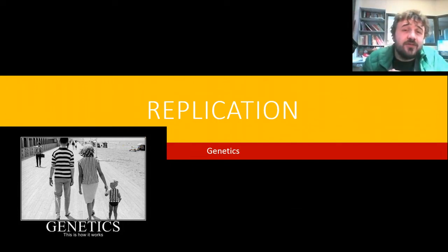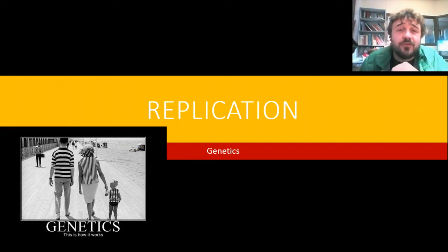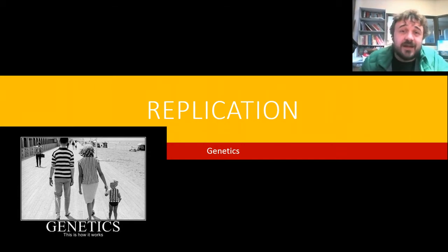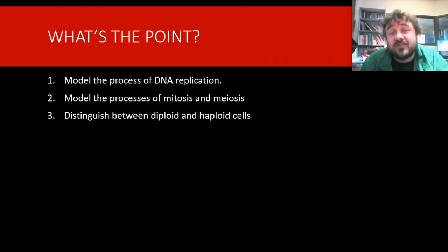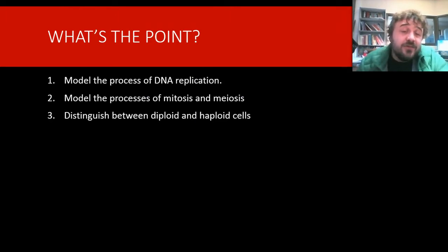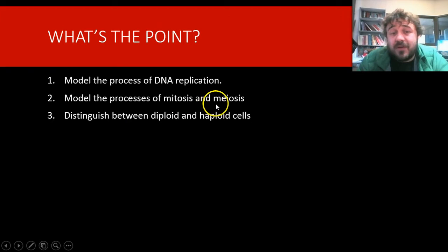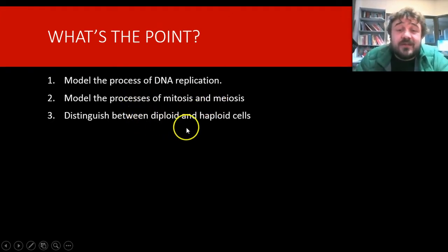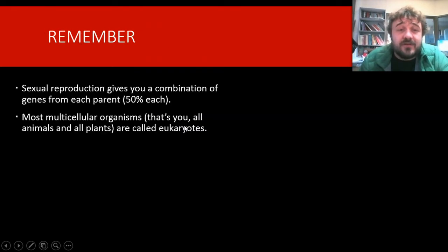All right, geneticists, so we're going to talk about replication — not reproduction, they're different. By the end of this, you should be able to model the process of DNA replication, and this includes both the ideas of mitosis and meiosis. You also want to be able to distinguish between a diploid cell and a haploid cell, and this is what we'll do first.